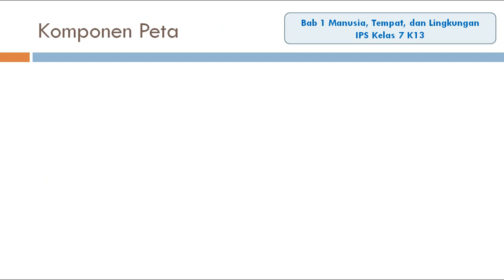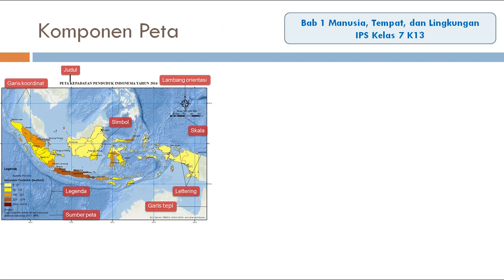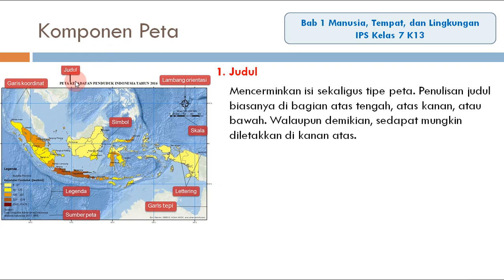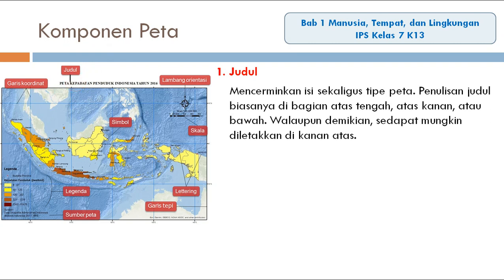Komponen atau unsur-unsur yang harus ada dalam suatu PETA. Yang pertama, judul. Judul mencerminkan isi sekaligus tipe PETA. Penulisan judul biasanya di bagian atas tengah, atas kanan, atau bawah. Walaupun demikian, sedapat mungkin diletakkan di kanan atas atau di atas bagian tengah.